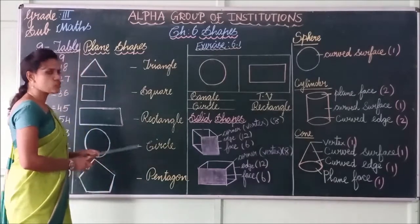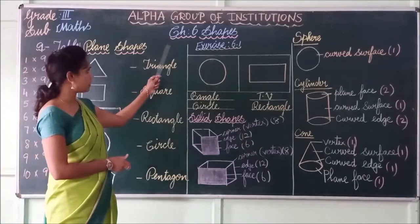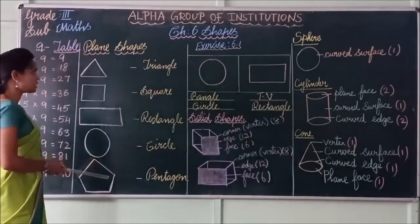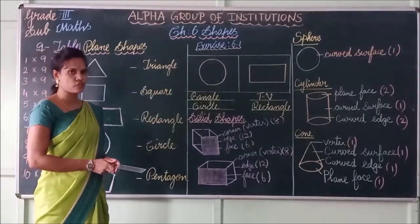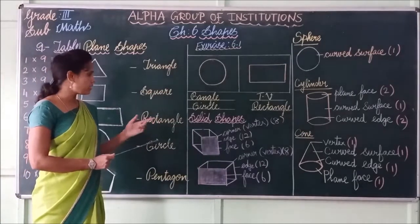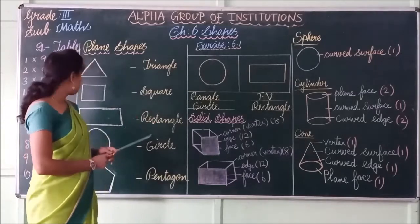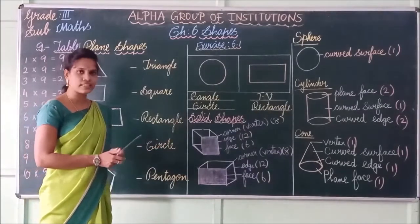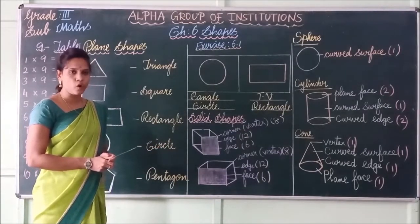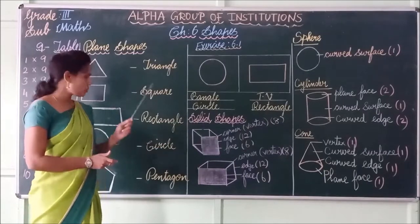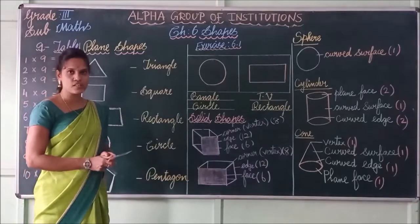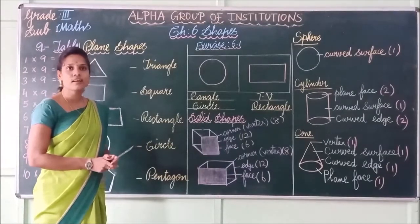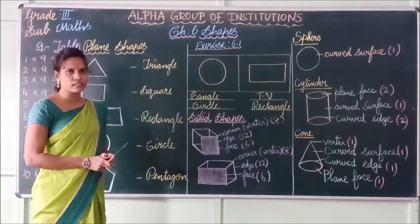Now we move on to the chapter. Today we are going to see a new chapter — Chapter 6: Shapes. First we are going to see plain shapes. We have 2 types of shapes: one is plain shapes and another one is solid shapes. In plain shapes we can say 2 dimensional shapes. In solid shapes we can say 3 dimensional shapes. You have already heard of 2D and 3D shapes. So plain shapes are called 2D, and solid shapes are known as 3D.